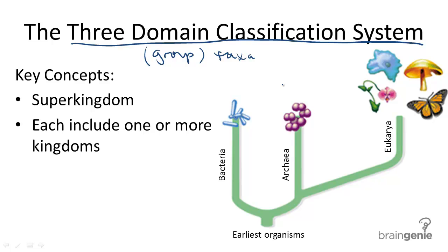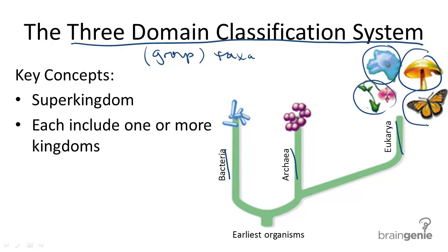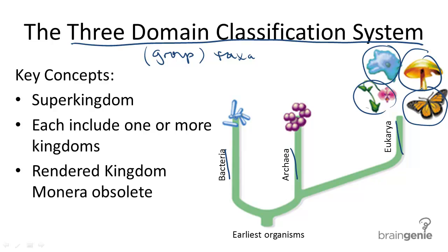Bacteria has its own kingdom, and archaea, or archaebacteria, also has its own kingdom. All eukaryotic organisms are organized into one domain, but there are four different kingdoms under this domain. In the early system of classification, there were only five kingdoms and there were no domains, so this new system renders the old name for the group containing bacteria obsolete. This was called the kingdom Monera.